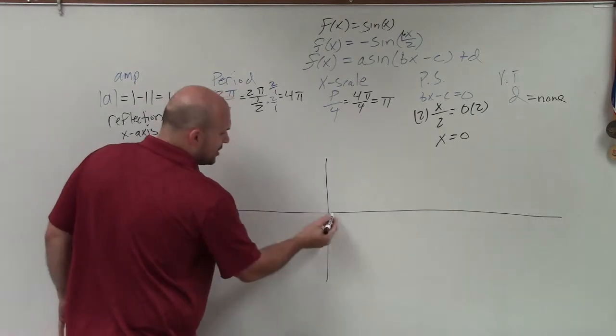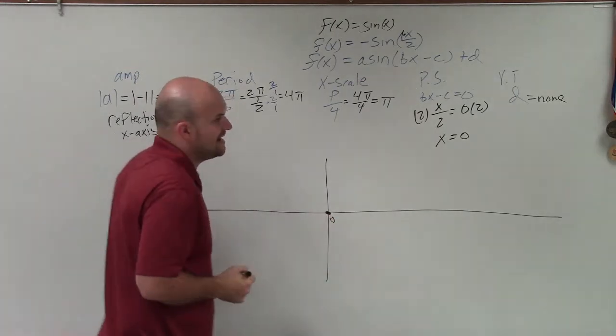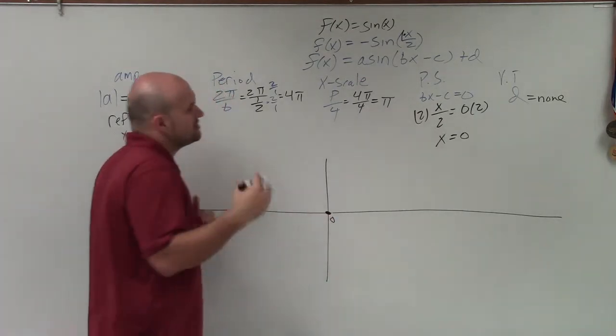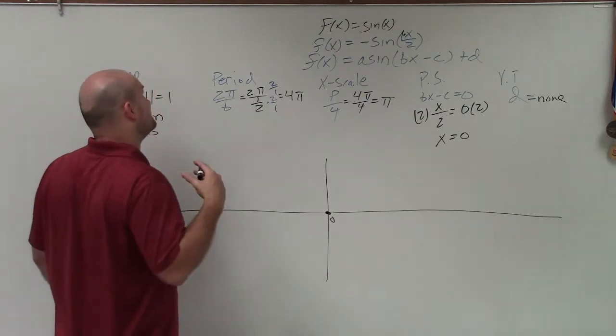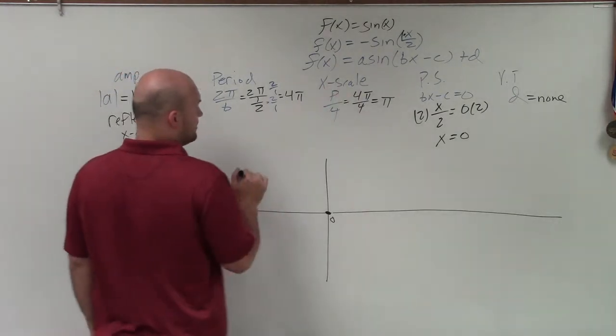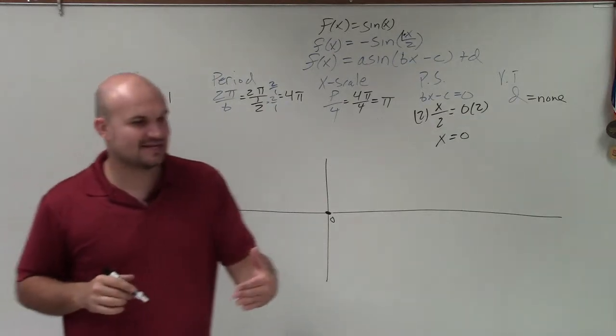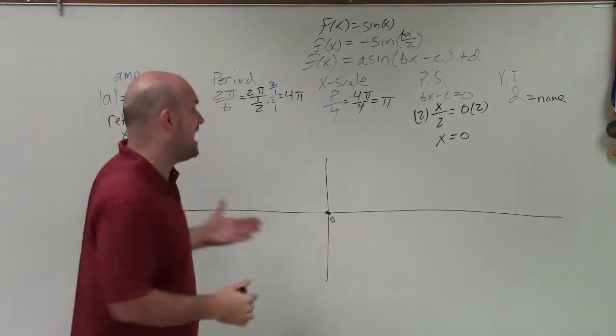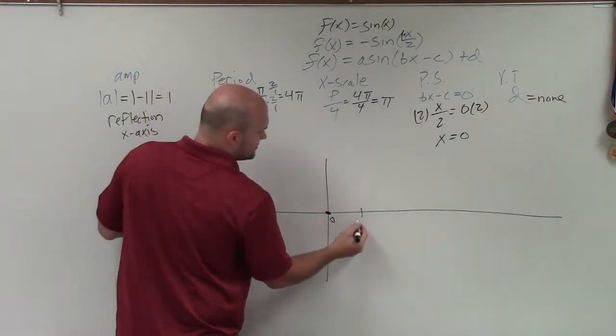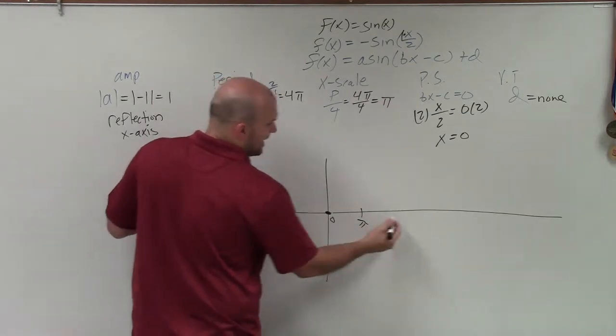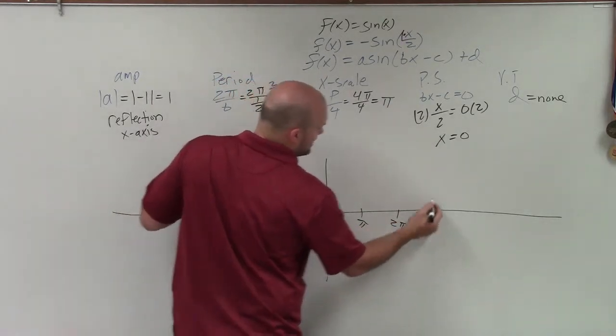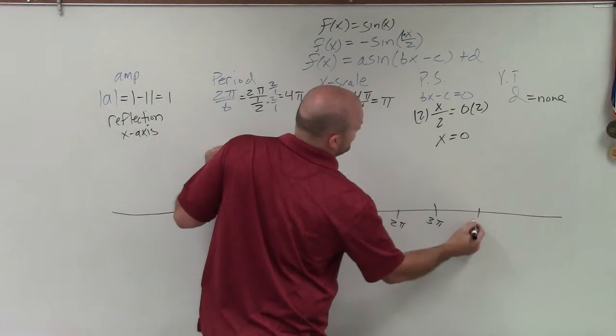All right, at 0, I know it's going to cross the x-axis. Now where it starts getting different is by the x scale. Where the parent graph had an x scale of pi halves, now I have an x scale of pi. So the next important point is pi. Then I have 2 pi, 3 pi, and 4 pi.